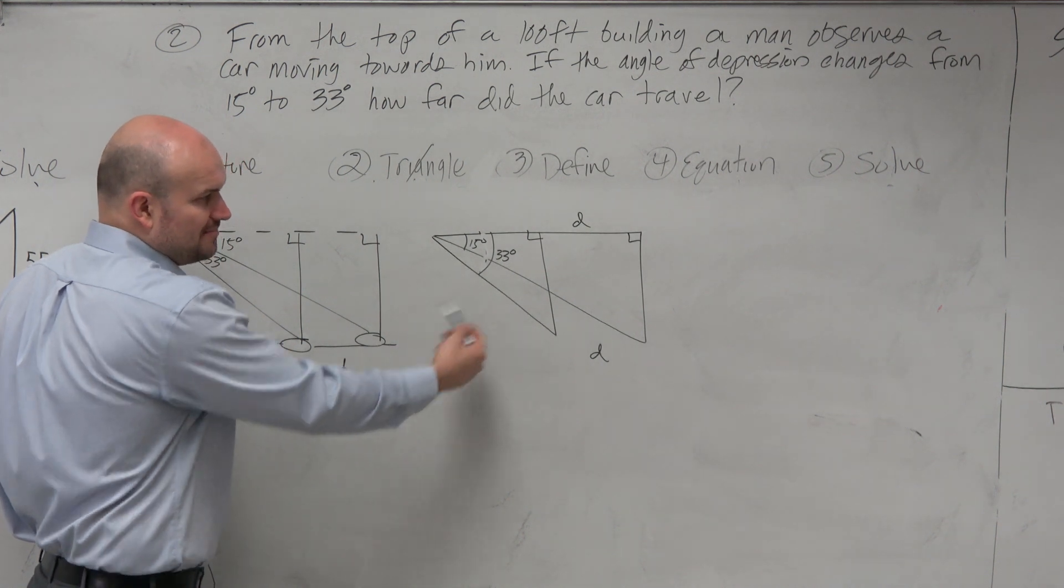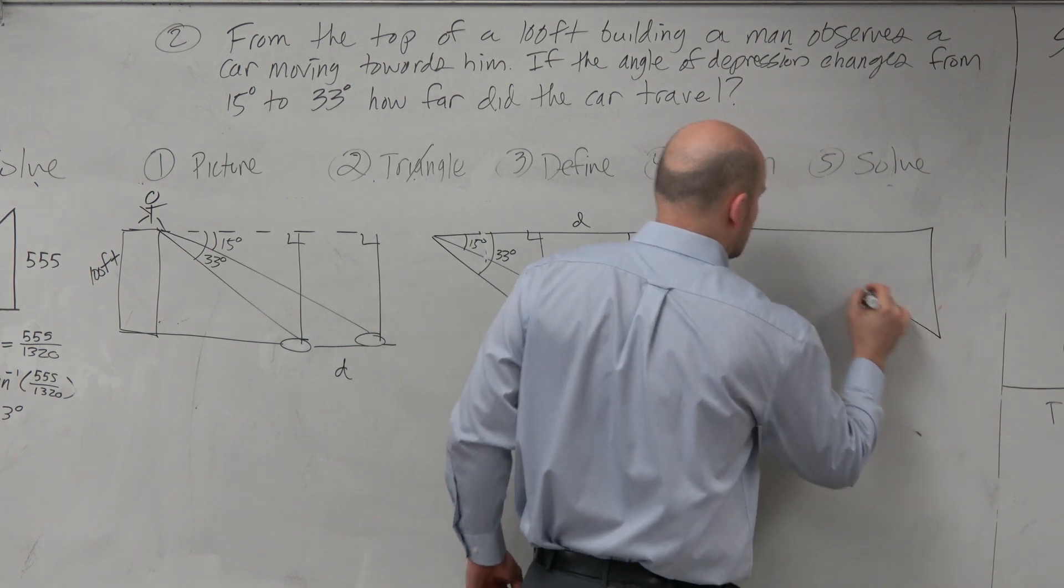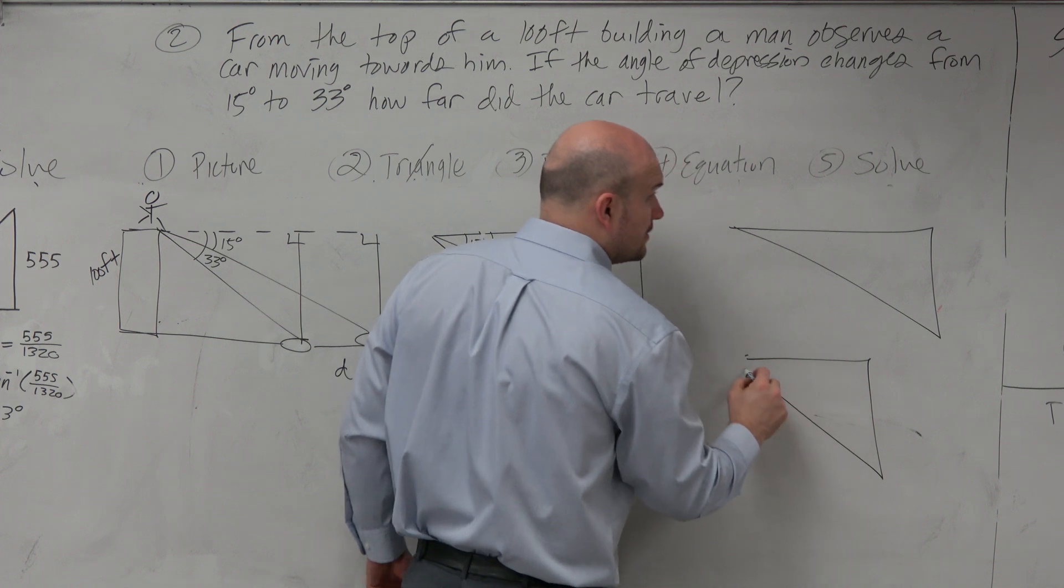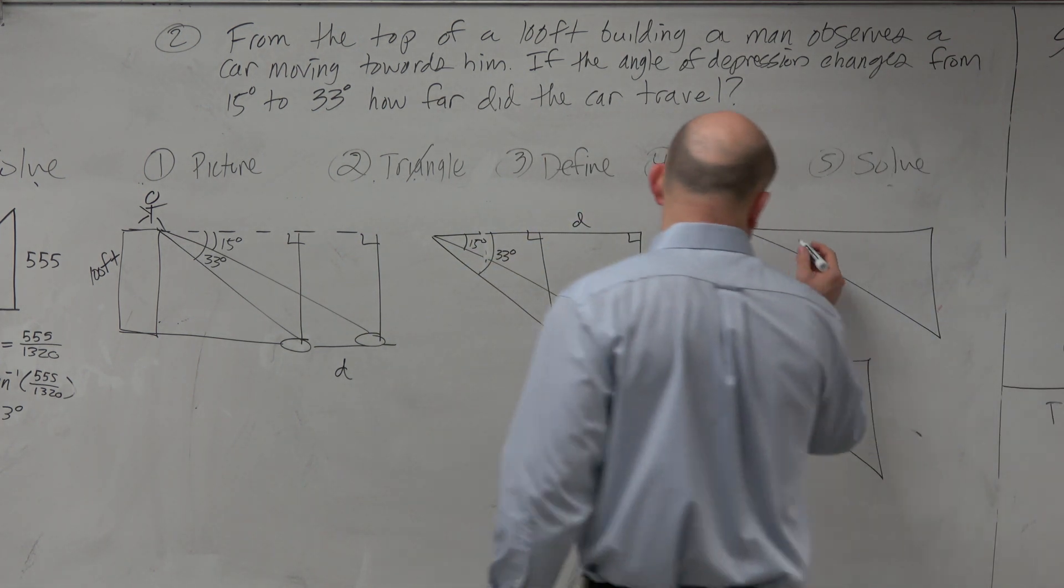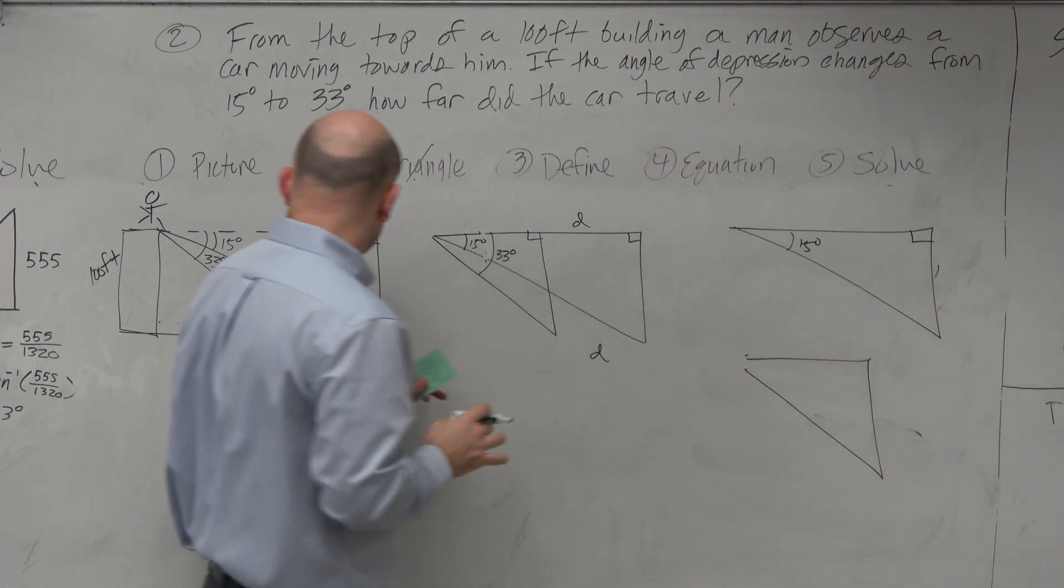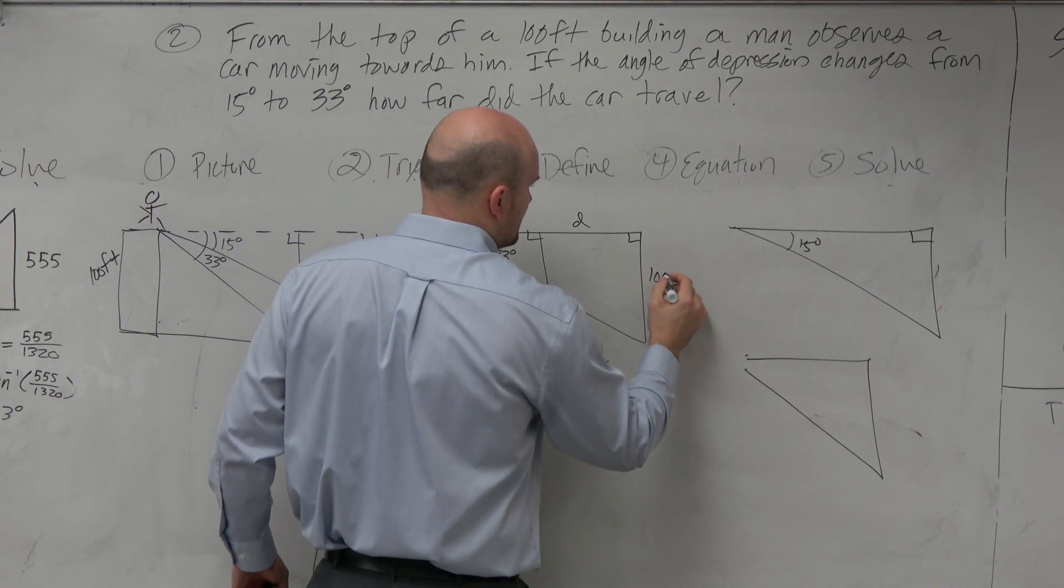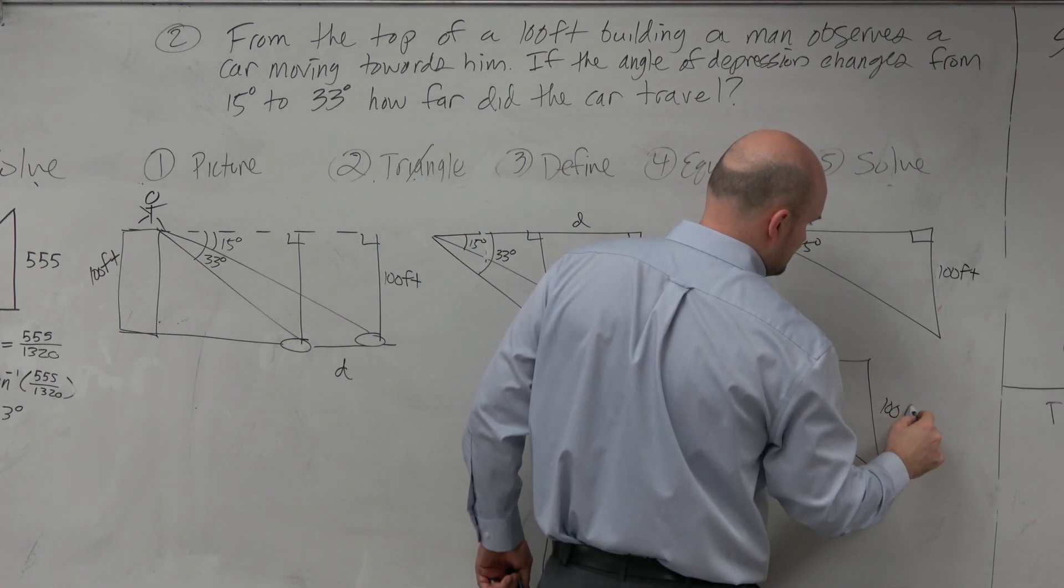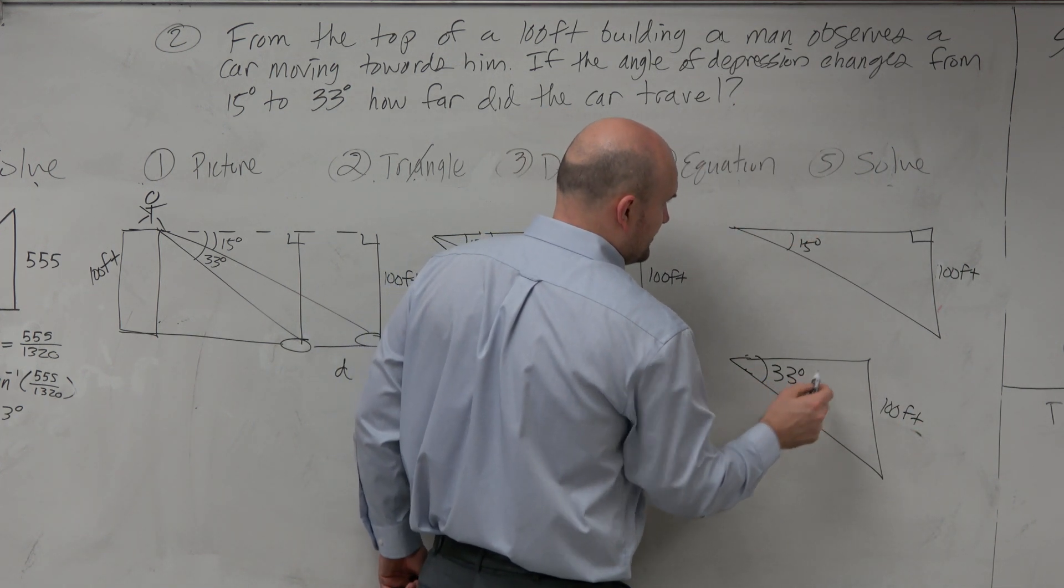So do I have enough information? Now, some people don't like the triangles separated like this. So let's draw them separately. So this one is 15 degrees, all right? And then again, oh, the other thing I forgot to mention is if this is 100 feet, then when I draw these, this is 100 feet. So this is going to be 33 degrees.